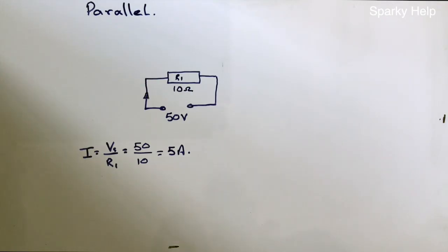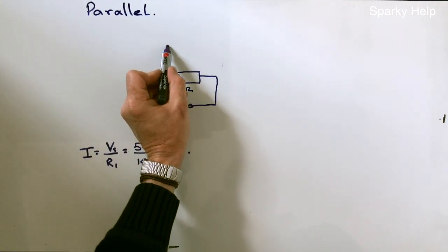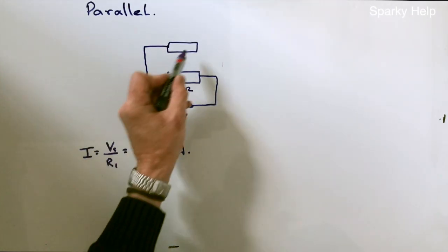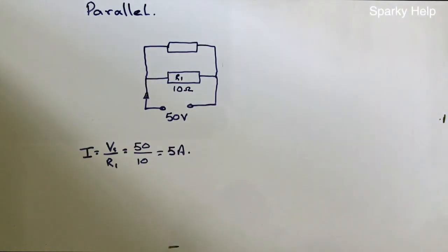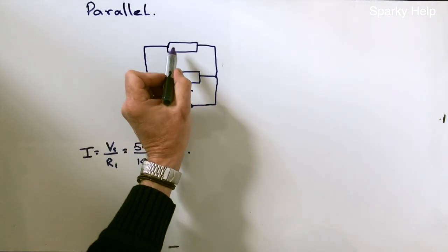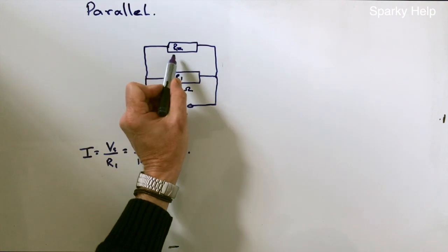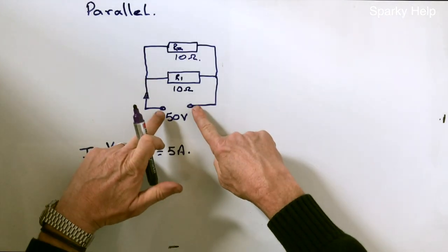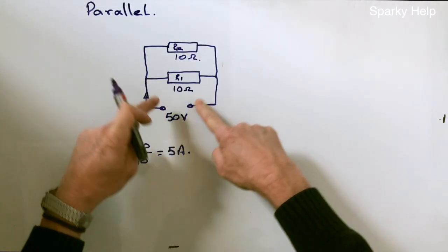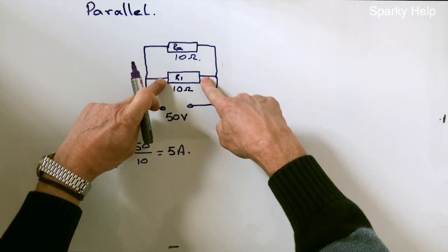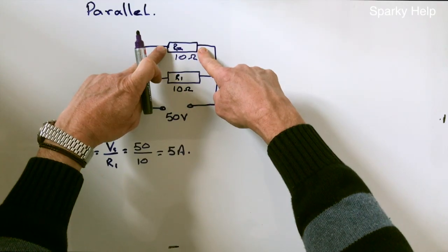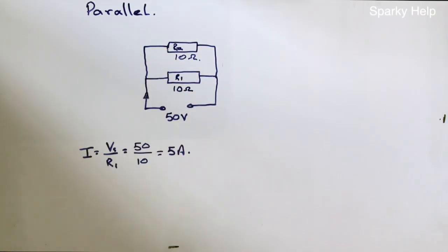However, what happens if we add another resistor to the circuit, but this time in parallel? So we add it there. If we add another resistor — let's call this one R2 — let's also make this one 10 ohms. If we look at the voltage, we measure with a voltmeter there, you would measure 50 volts. Put a voltmeter there, it will also be 50 volts. Put a voltmeter there — it will also be another 50 volts. So therefore, the voltage in a parallel circuit stays the same.